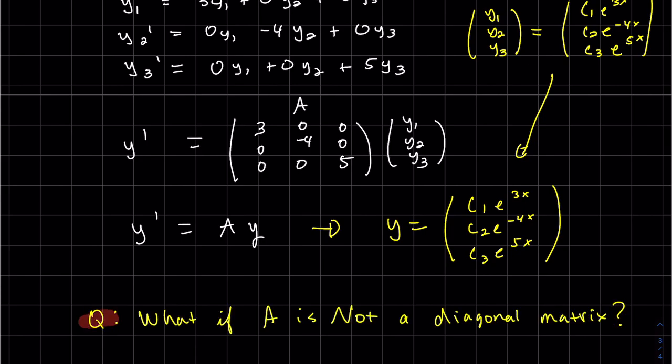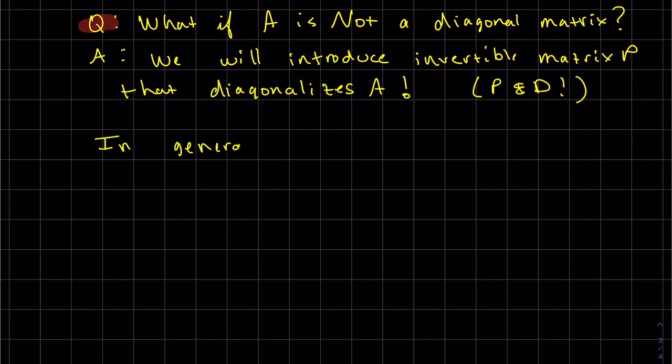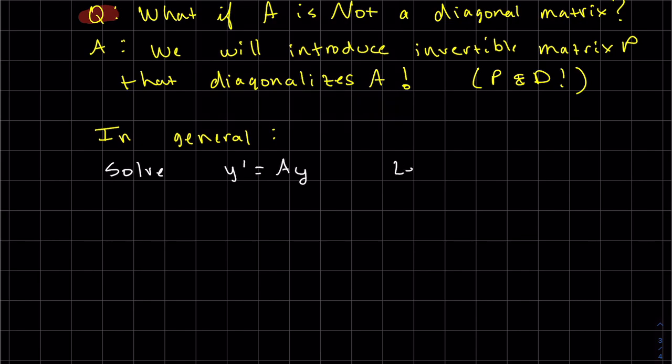So what if A is not a diagonal matrix? Well, we'll fix that. We'll introduce an invertible matrix P that diagonalizes A. Does that sound familiar? Here's how we're going to do it. It's basically going to be done with this simple substitution that's easy to remember: y equals Pu. And so we just substitute it in. We substitute into there and there. So we'll have to take the derivative. When you take the derivative of this, P is a constant matrix. So it's Pu prime.